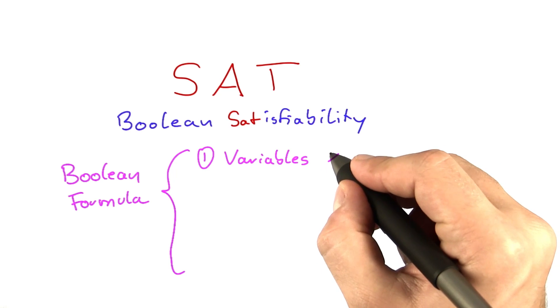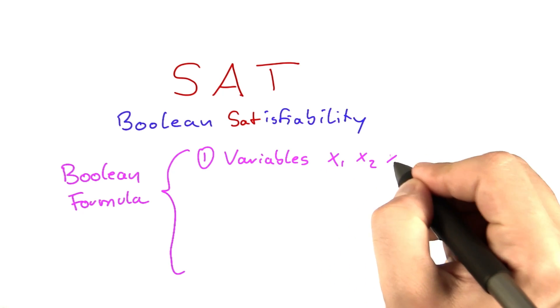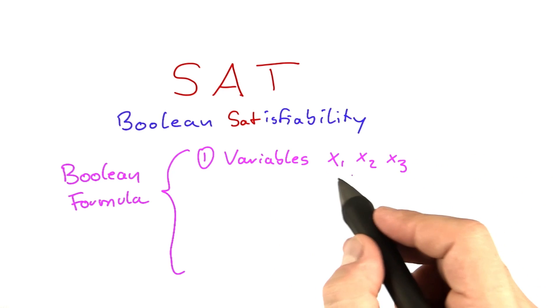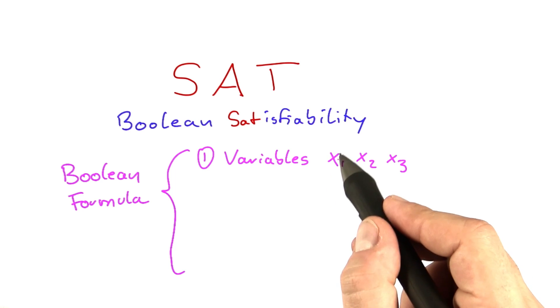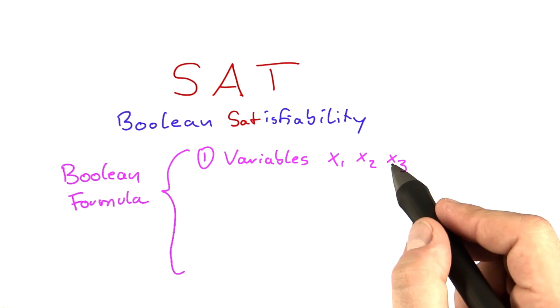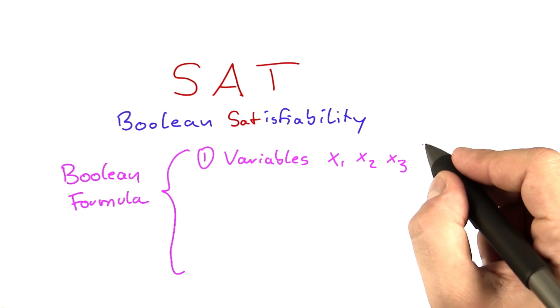Those variables I'll write in this course usually as x1, x2, x3, and so on. The nice thing about these variables is that in a normal formula, a variable x can take a number of different values, but in a Boolean formula, a variable can only take two different values.